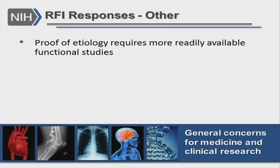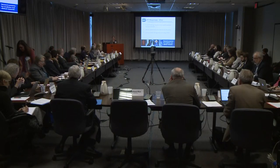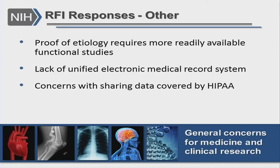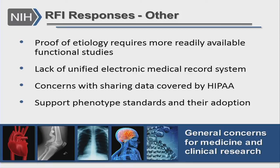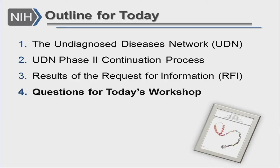There were also more general concerns related to medical practice and clinical research, such as the need for readily available functional studies when encountering a new variant, challenges with the diverse electronic medical record system in the United States making data sharing harder, concerns about sharing identifiable data and HIPAA protections, and a general call to support phenotyping standards to enable more ready data sharing.